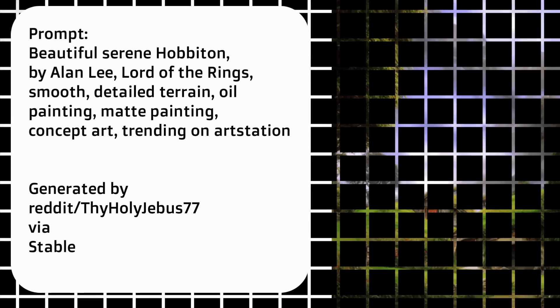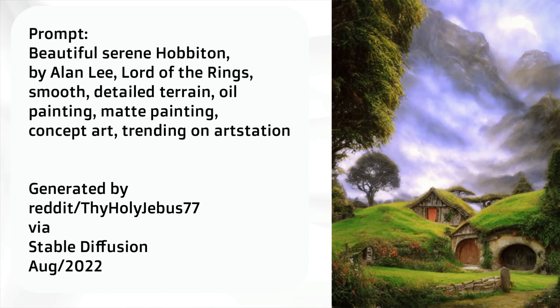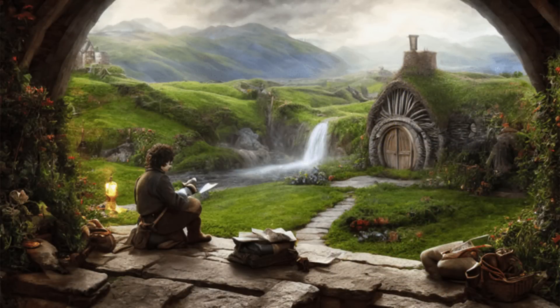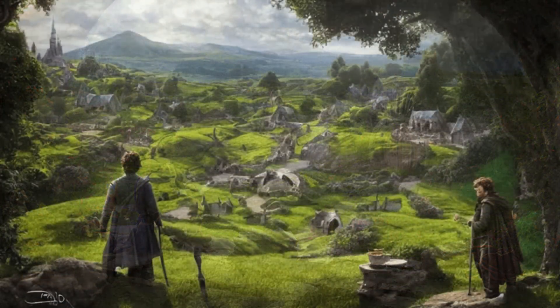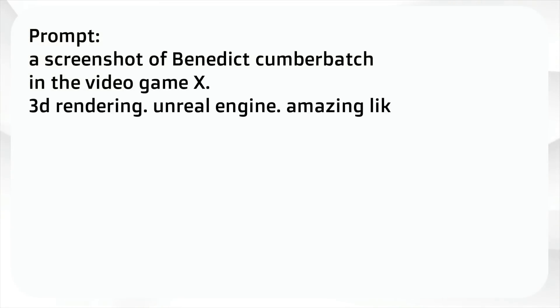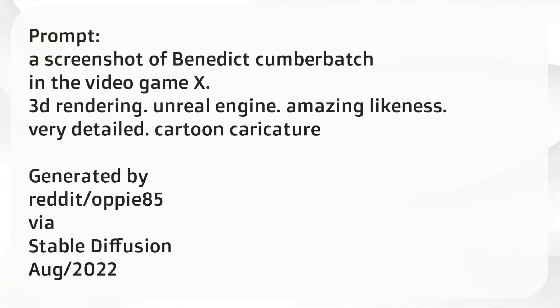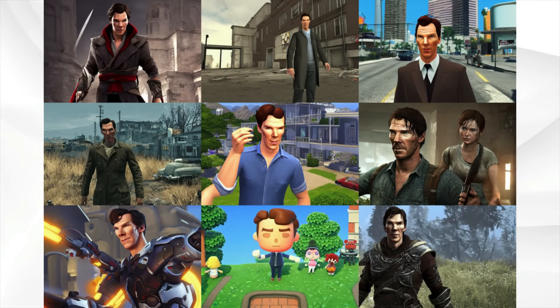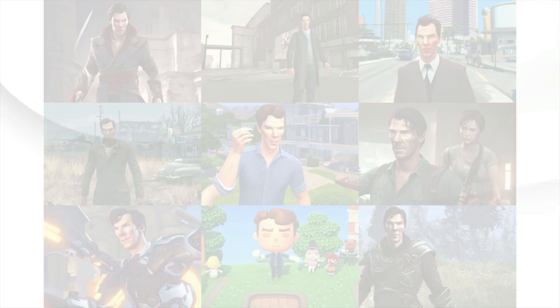'Beautiful Serene Hobbiton by Alan Lee, Lord of the Rings, smooth detailed terrain, oil painting.' Some of these prompts get very long. Then: 'A screenshot of Benedict Cumberbatch in various video games' — see which ones you can recognize. I see Animal Crossing and GTA maybe. Let's do the same thing for Elon Musk in different games — which ones can you recognize?